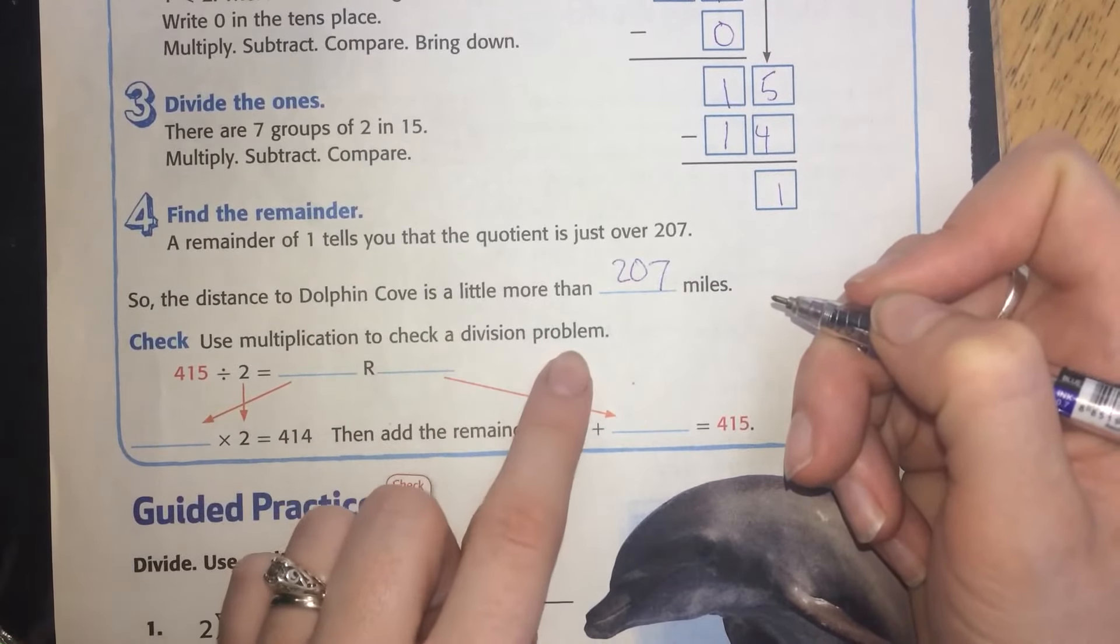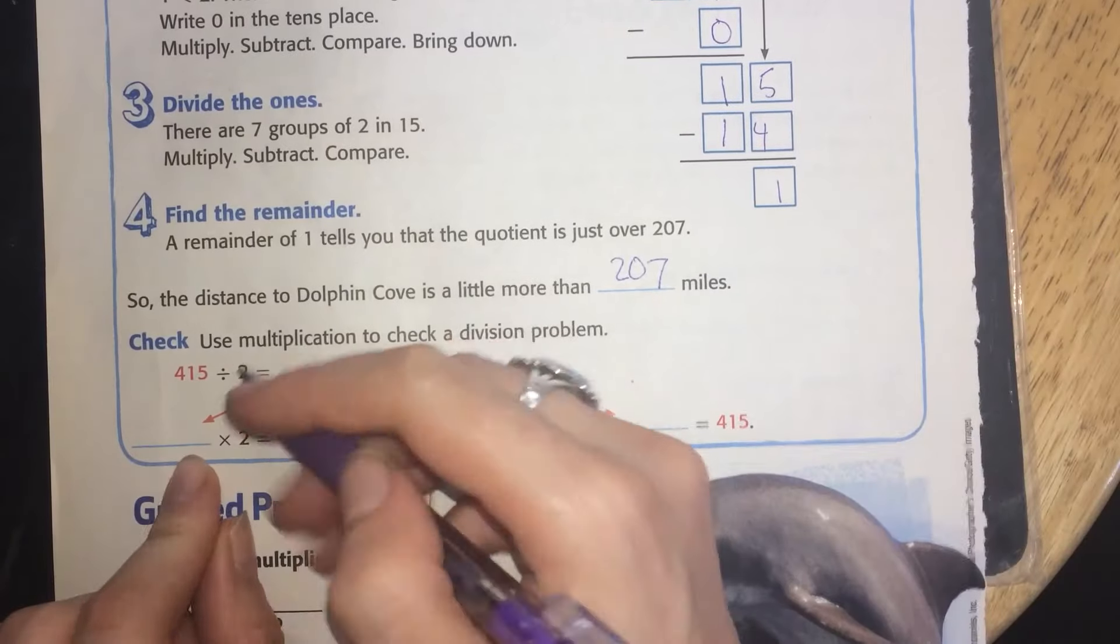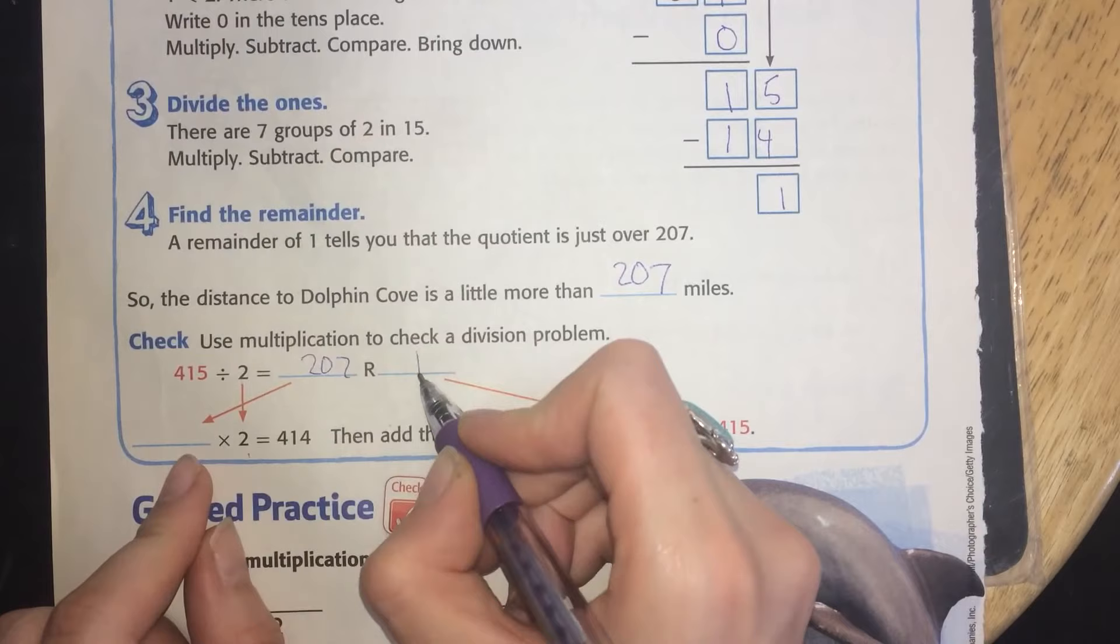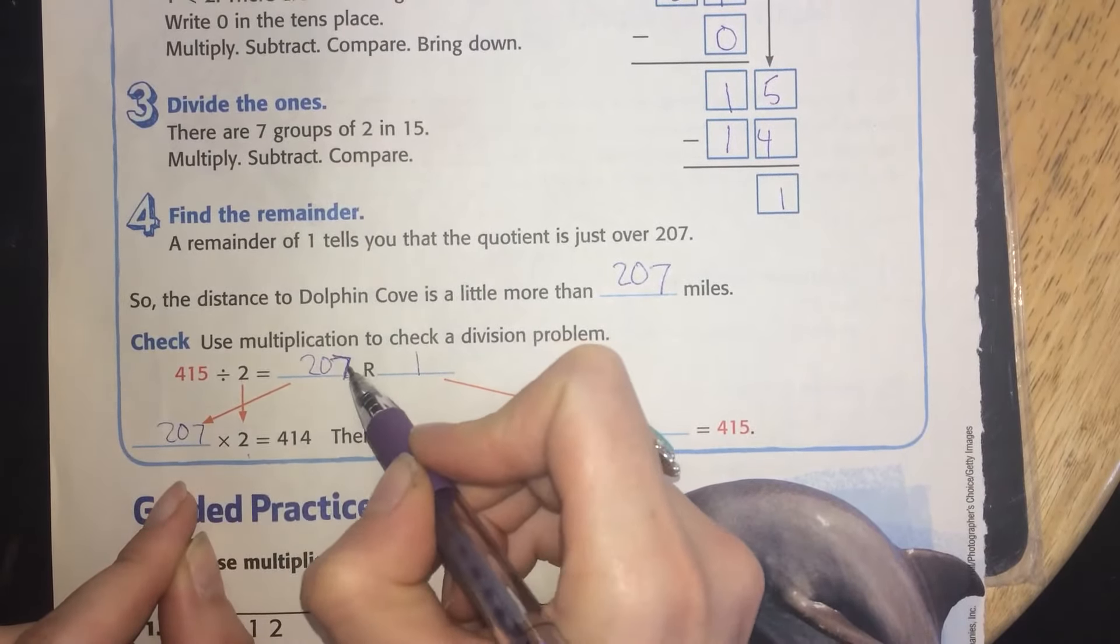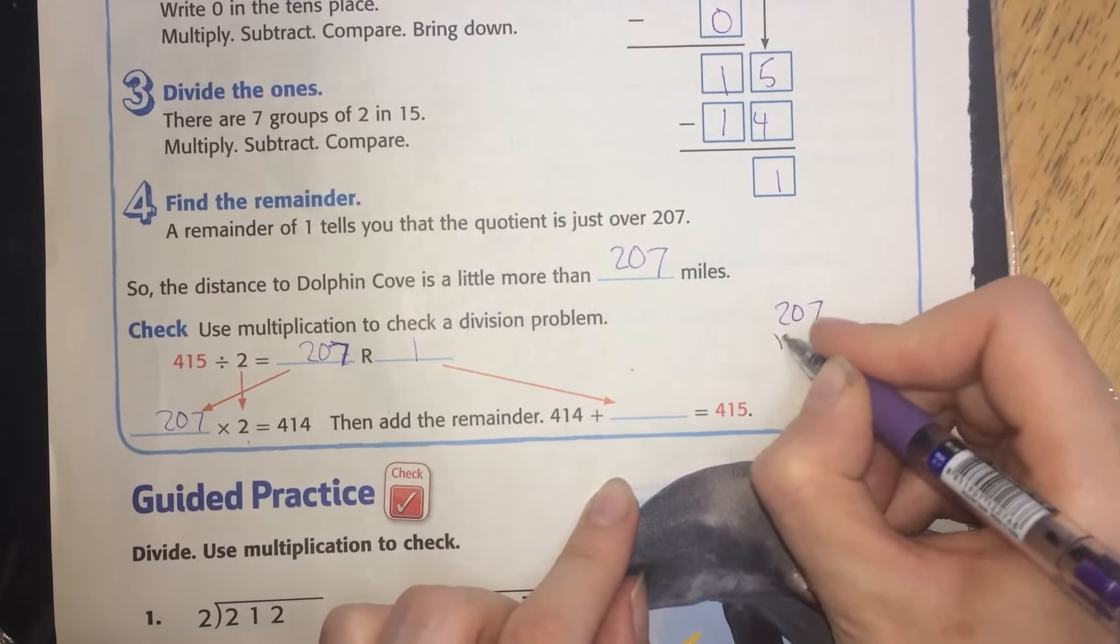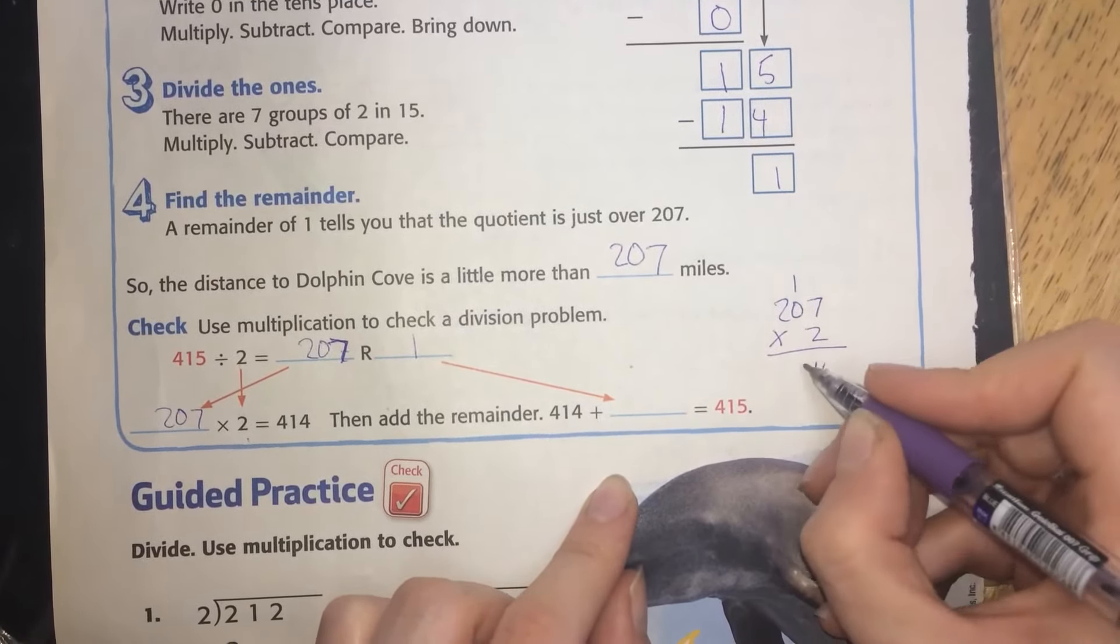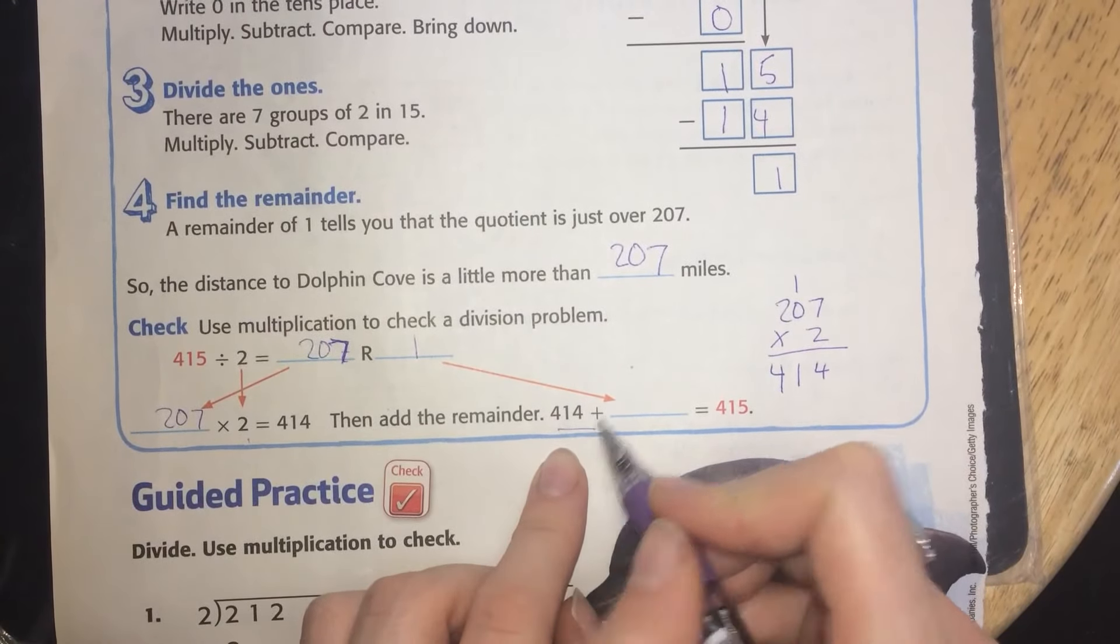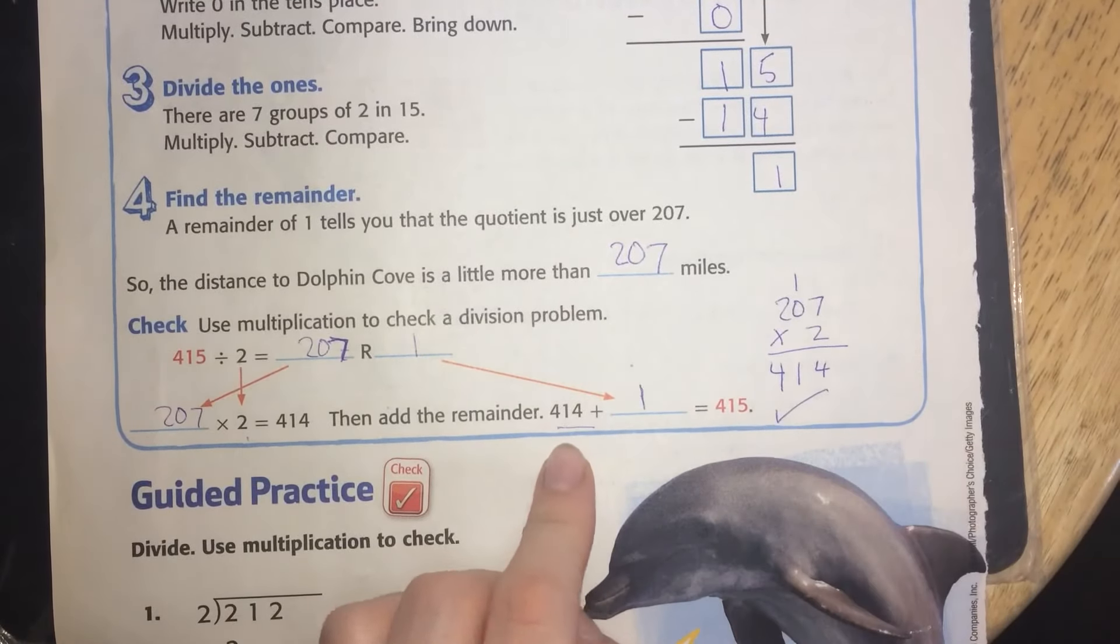Use multiplication to check a division problem. Remember the divisor and the answer was 207 remainder of 1. So we have 207 here. 207 times 2. So it's 414 and plus 1 equals 415. So we've done this correctly.